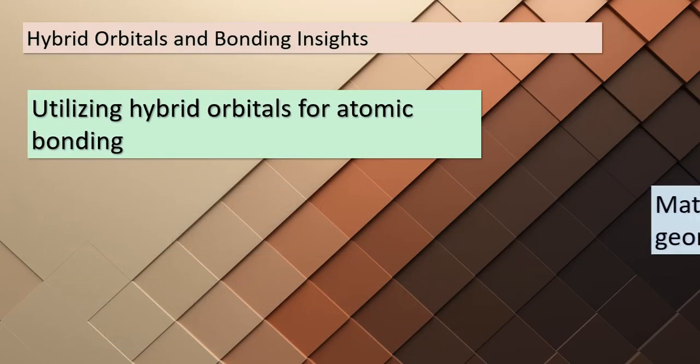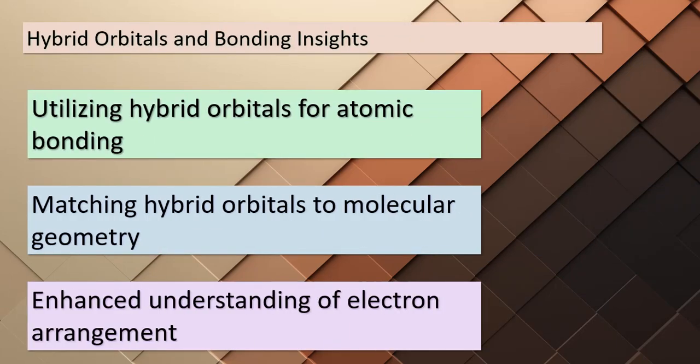We're about to uncover the practical implications of hybrid orbitals in atomic bonding. When atoms bond, they utilize these hybrid orbitals to achieve the molecular geometry predicted by the VSEPR model. By aligning the hybrid orbitals with the molecular shape, we gain a better grasp of how electrons are arranged around the central atom. This alignment enhances our understanding of the atomic bonding process, highlighting the close relationship between hybridization and the VSEPR model.